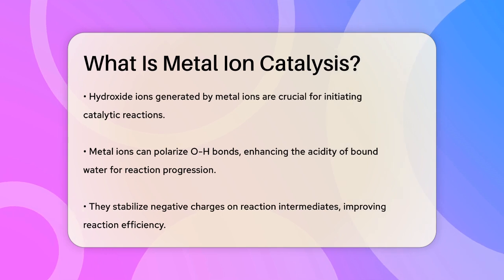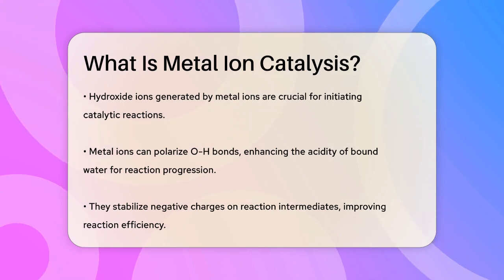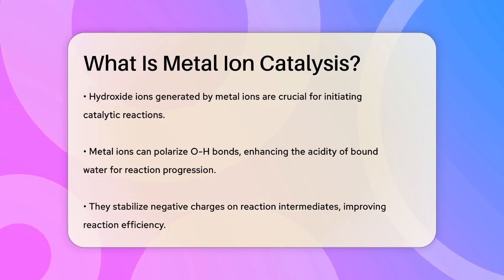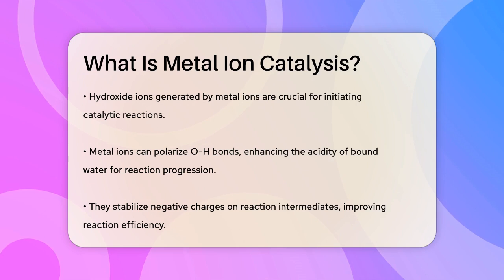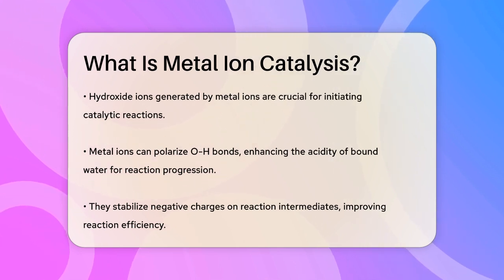Another key role of metal ions is to stabilize negative charges on intermediates during the reaction. For example, in the catalysis of carboxypeptidase A, zinc ions help to stabilize the negative charge on the intermediate, making the reaction more efficient.